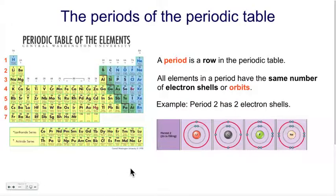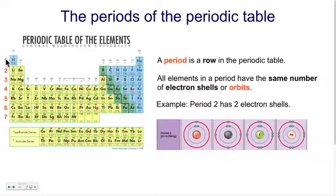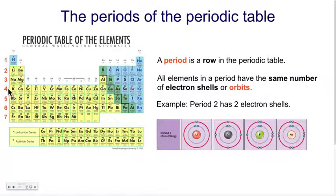When we look at the structure of the periodic table, we can see numbers. Very often we can see numbers on the left-hand side. The rows — so we're talking horizontally — the rows are numbered. And these numbers correspond to the number of energy levels or shells or orbits that the elements in that row have.